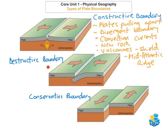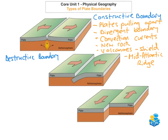Next we're going to look at destructive plate boundaries. Destructive plate boundaries is where plates collide with each other. As you can see, the two plates are crashing against each other, and one of the plates may be subducted if it's an oceanic plate and the other plate is continental.